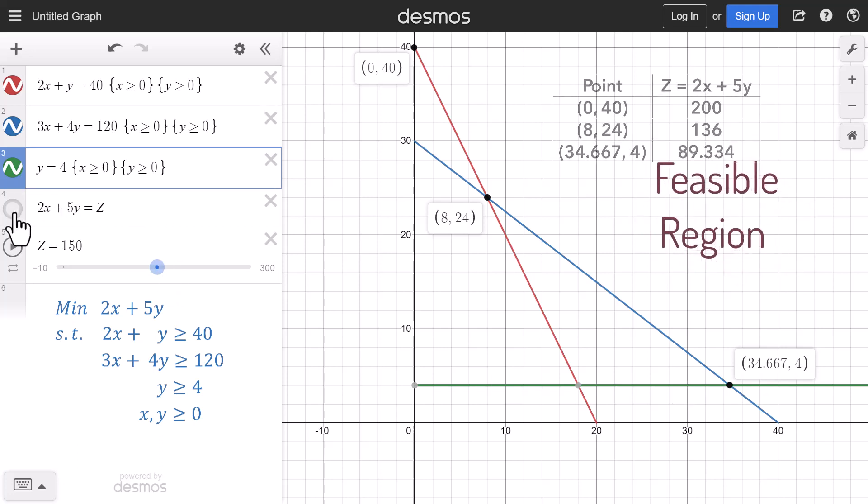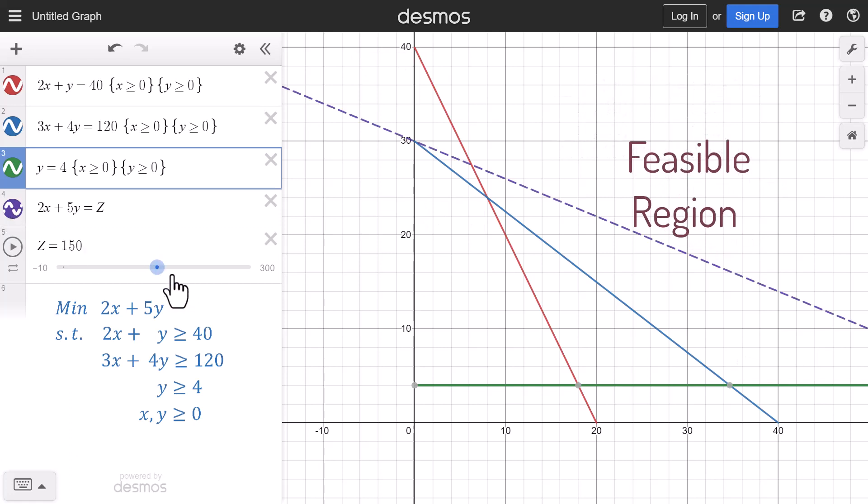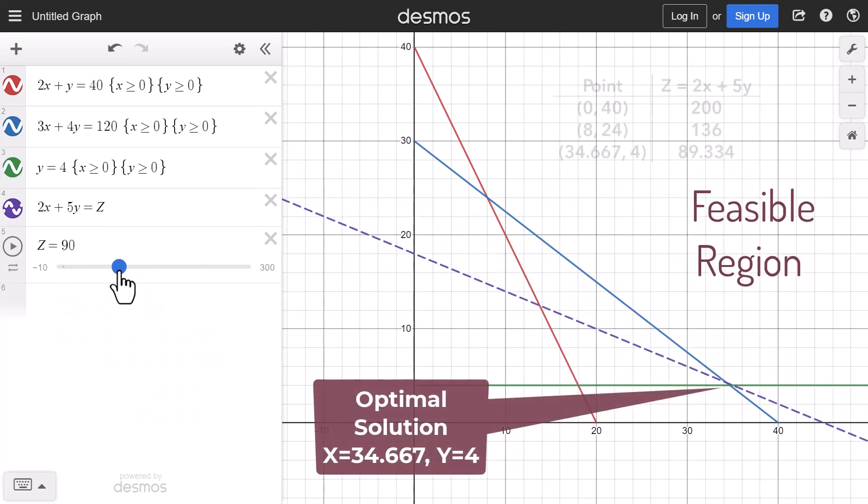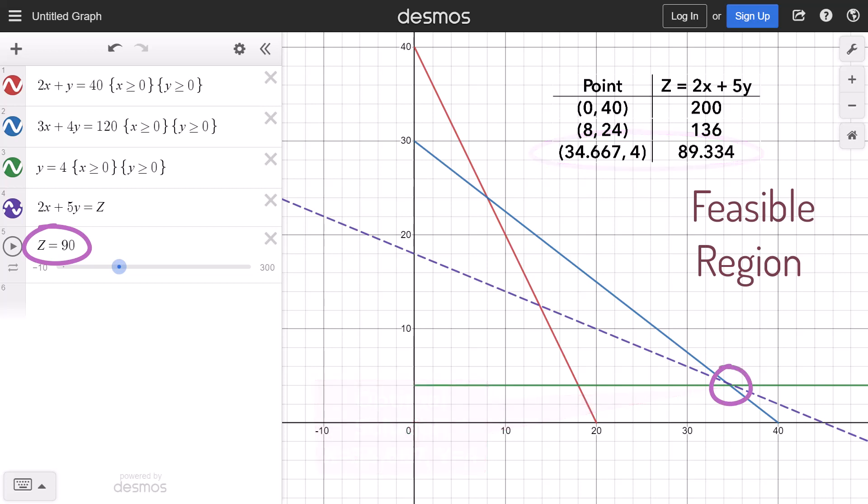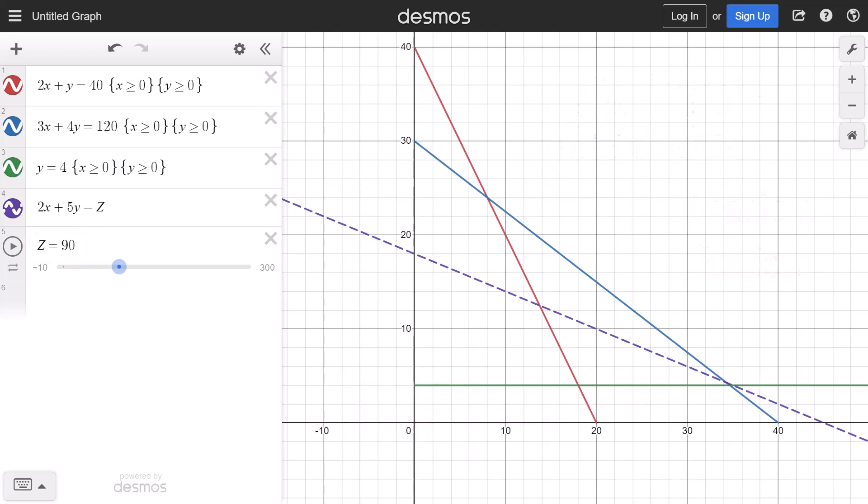You can then substitute these values into the objective function to determine the minimum. On the other hand, I can turn on the objective function line, then slide it down till I touch the lowest point, which will represent the optimal solution point. Note that the objective function value at this point is 89.333. 90 is displayed here because the objective function is not exactly at the intersection point and because the slider is not displaying decimals.